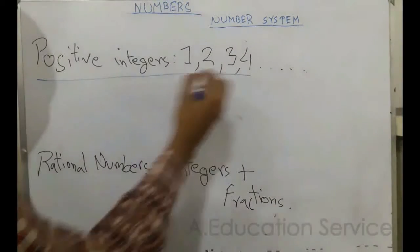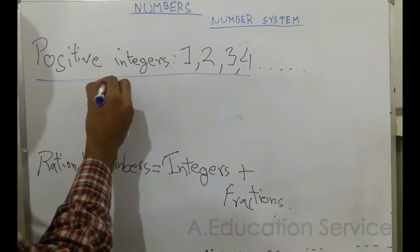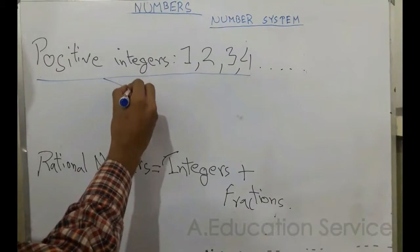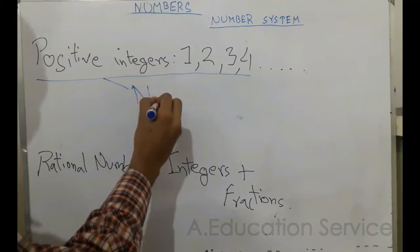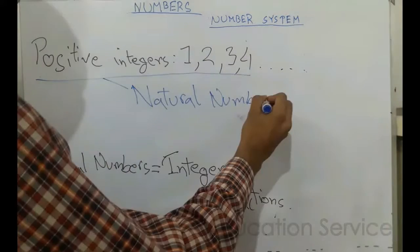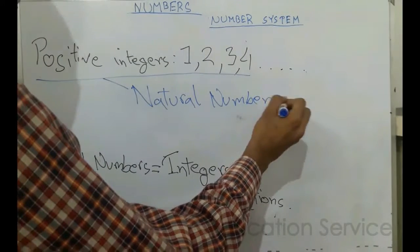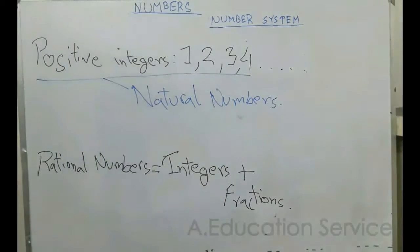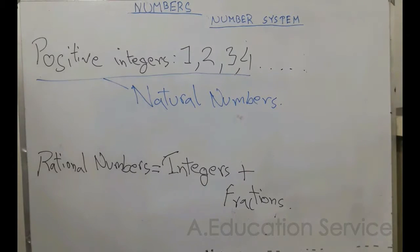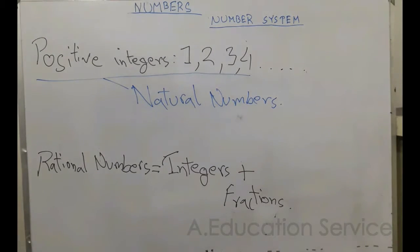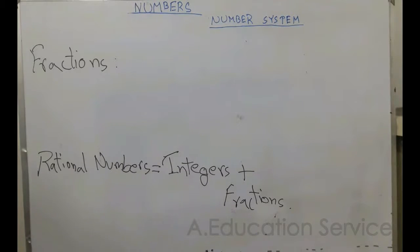These positive integers are also called natural numbers. Most students often confuse natural numbers with real numbers, but natural numbers are just the positive integers, while real numbers are all the numbers.